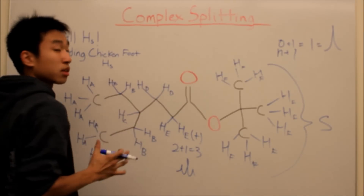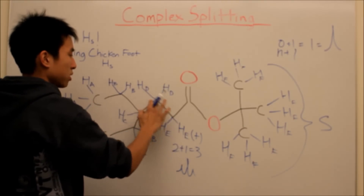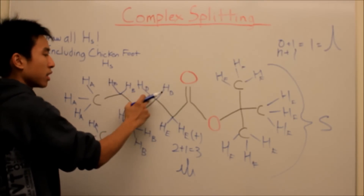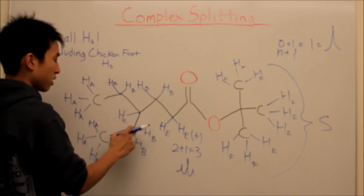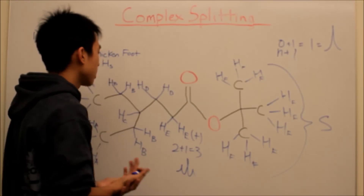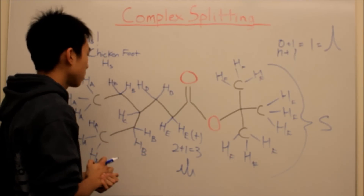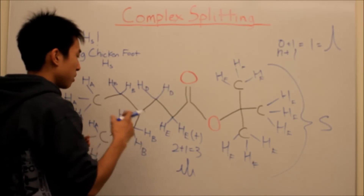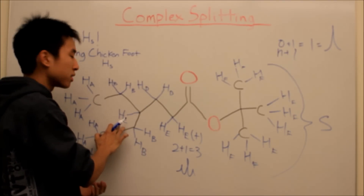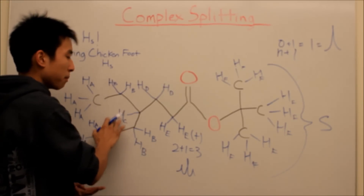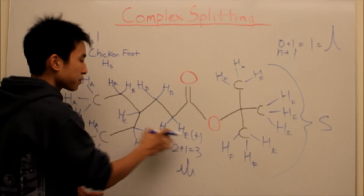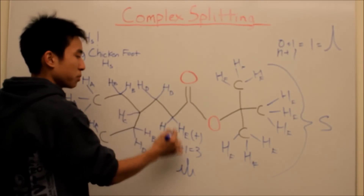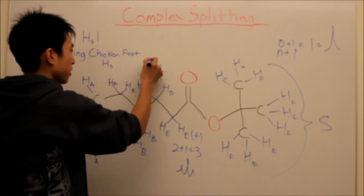Now HD is going to get a little complicated. HD is being split by HE — one bond, two bonds, three bonds — and also by HC. One bond, two bonds, three bonds. The rest are too far away. Here's where complex splitting comes in. You do the lower number first: HC gives one hydrogen, so one plus one equals two — that's a doublet. But you're also being split by the two HE hydrogens — two plus one equals three, giving a triplet. So HD would be a doublet of triplets.